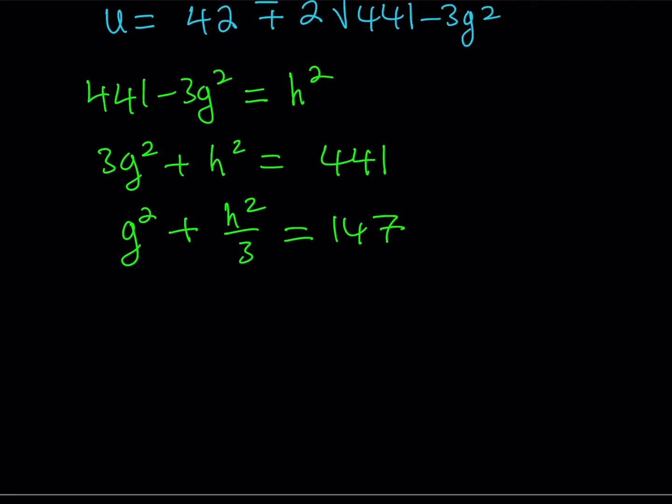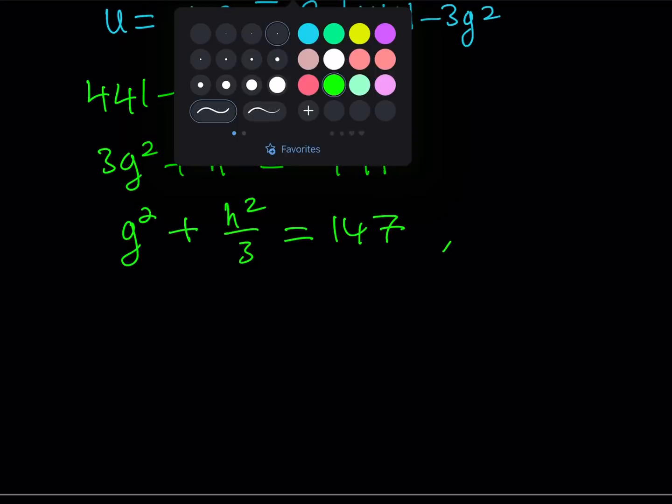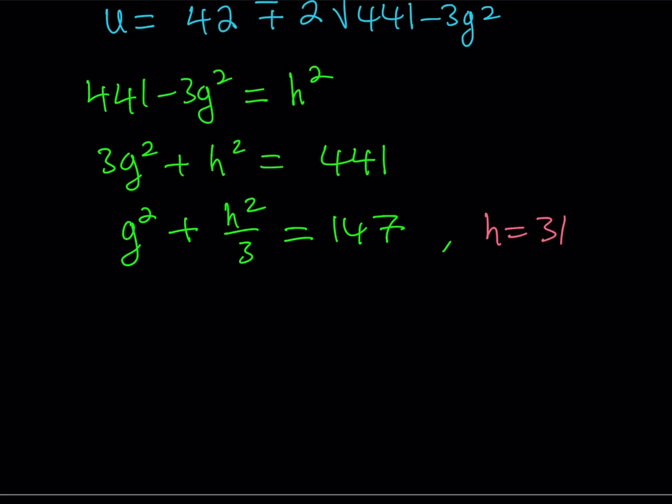Now, what am I seeing? Well, G squared is an integer, 147 is an integer. Therefore, H squared over 3 also needs to be an integer, which means H squared is a multiple of 3. But that means H is a multiple of 3. Therefore, we can write H as 3k. Isn't that awesome? We're using a lot of number theory and algebra here. Let's replace H with 3k. That's going to give us 9k squared divided by 3, which is 3k squared. Finally, this is the type of equation you want to get because from this point on, it can easily be solved.